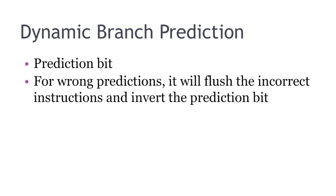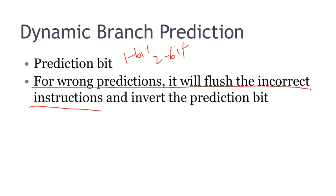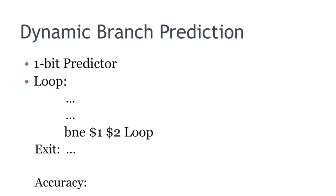So static branch prediction is good for programs that mainly have one type of loop. But what if we have a large program with mixed types of loops? In this case, dynamic branch prediction can do a better job. Dynamic branch prediction has a prediction bit, which is usually one bit or two bits. And for wrong predictions, in addition to flushing the incorrect instructions, you will invert the prediction bit.